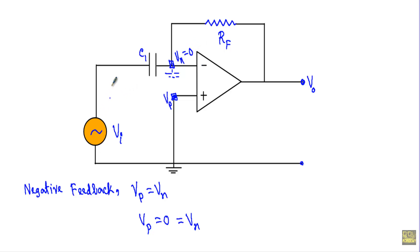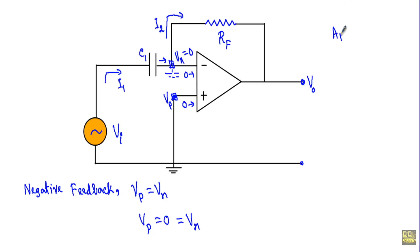Let's say the current supplied by the source is I1. There will be no current flow inside the op-amp terminals — the current will flow at the outer region of the capacitor. When the circuit is in negative feedback, the current at the inverting and non-inverting terminals is 0. Let's say the current flowing through the feedback resistor is I2. Applying KCL at this terminal, I get I1 equal to I2.